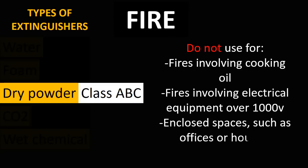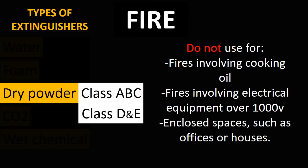Do not use dry powder type fire extinguishers for fires involving cooking oil, fires involving electrical equipment over 1000 volts, or in enclosed spaces such as offices or houses, as the powder can be easily inhaled and the residue is very difficult to clean up. Dry powder fire extinguishers can also be used on some electrical fires, and specialist dry powder fire extinguishers are used for flammable metals. Thus, dry powder fire extinguishers can be used on Class A, B, C, D, and E fires.